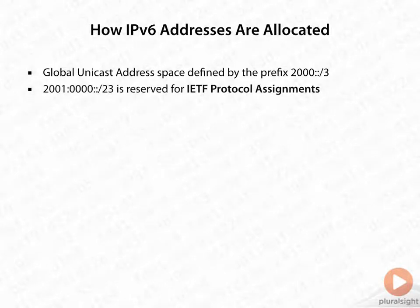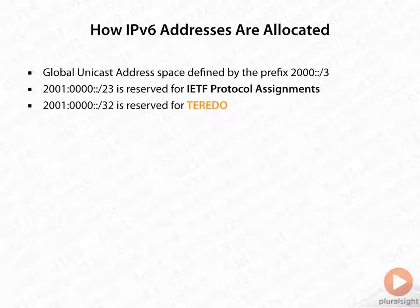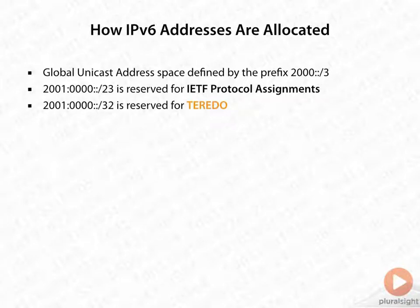The 2001:0000::/23 is actually reserved by the IETF — it's used for IETF protocol assignments. Within that, we have the 2001:0000::/32, which is the first 32 bits of that address, and that's reserved for Teredo.